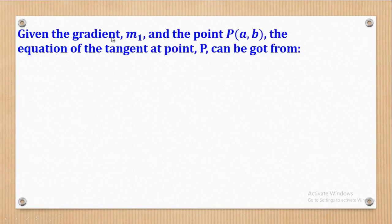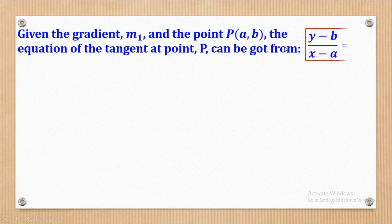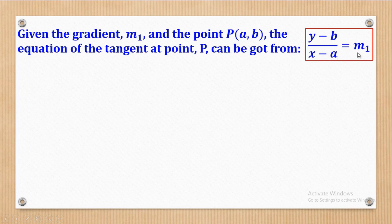Given the gradient M1 and the point P(A, B), the equation of the tangent at point P can be obtained from the expression: change in Y over change in X equals M1. Change in Y will be Y minus B, where B is the Y coordinate of point P; change in X will be X minus A, where A is the X coordinate of point P; and M1 is the gradient of the tangent.